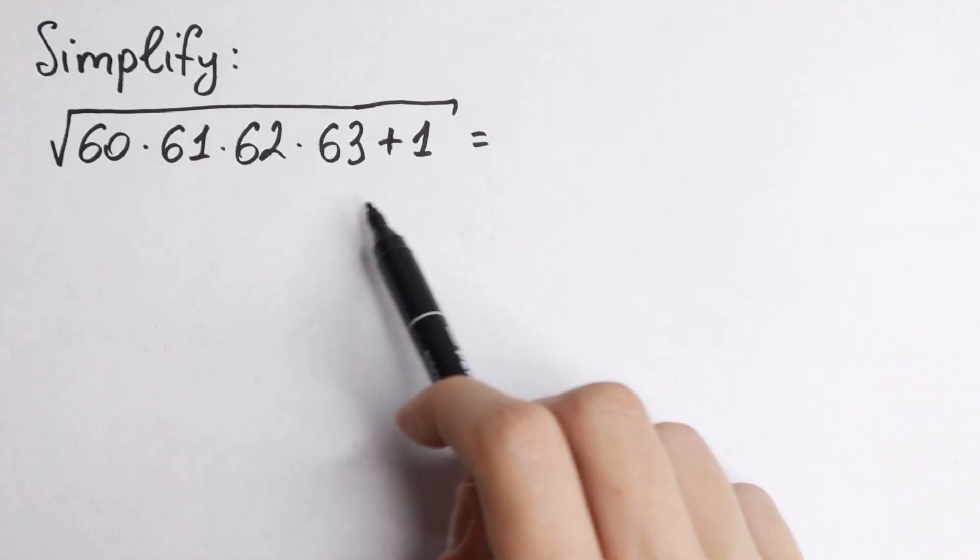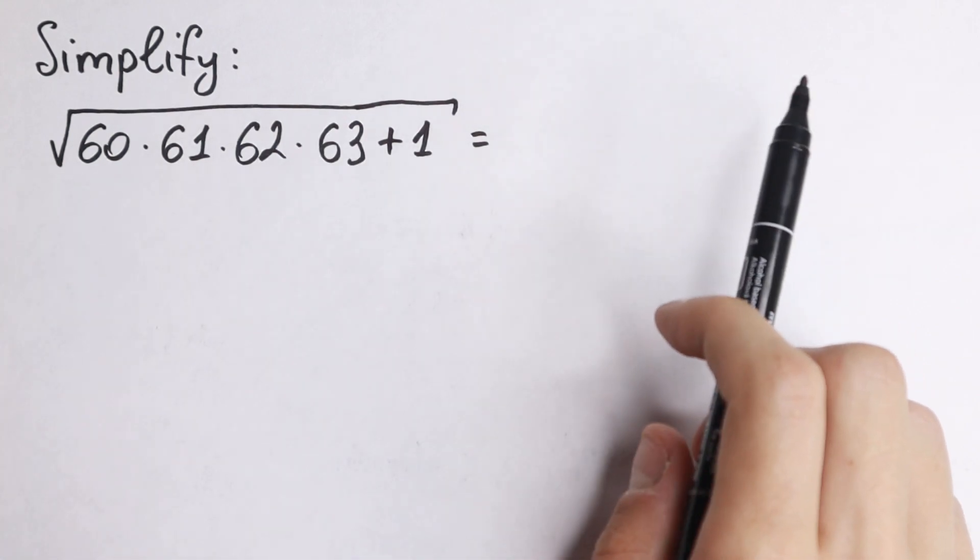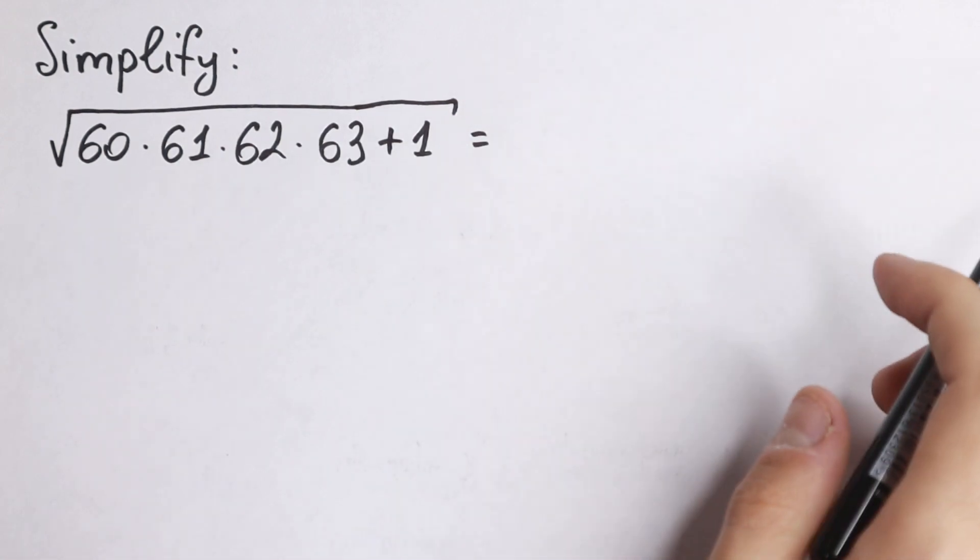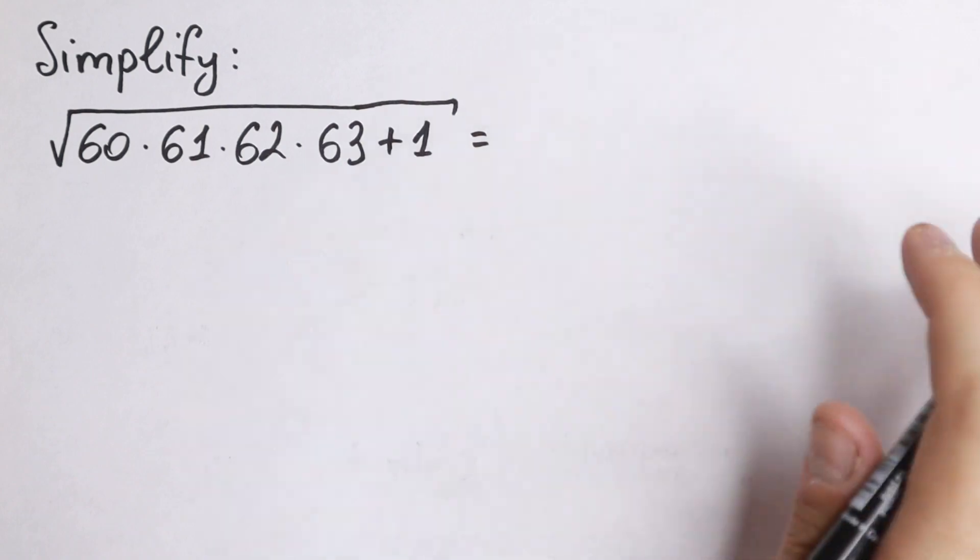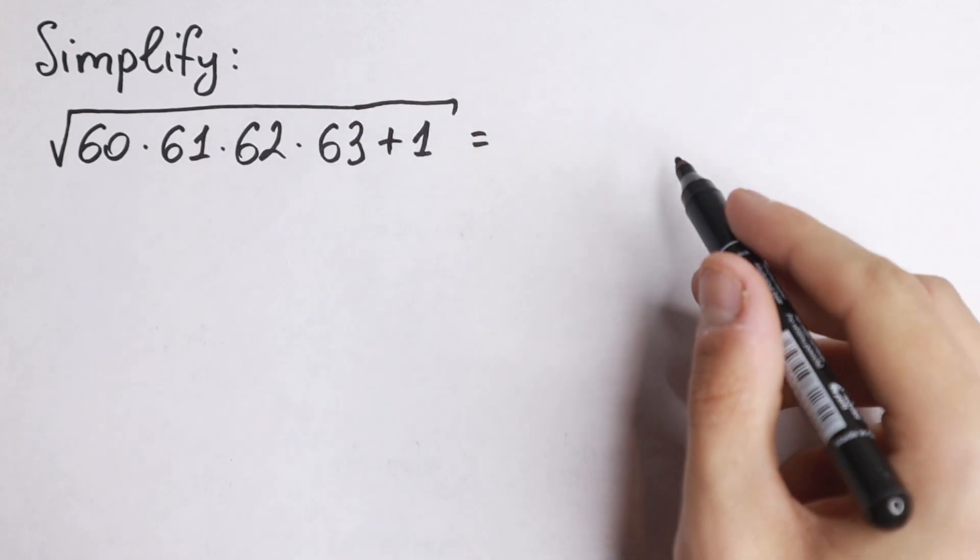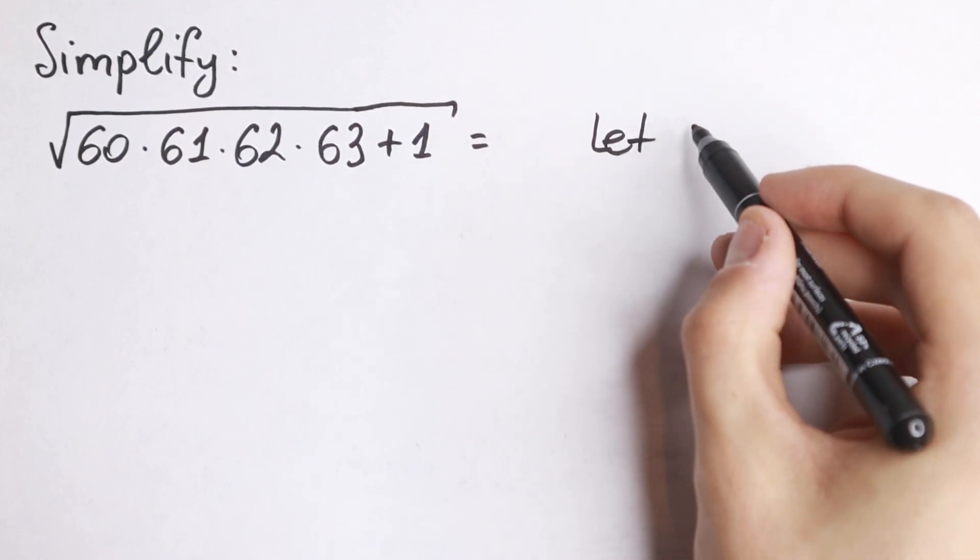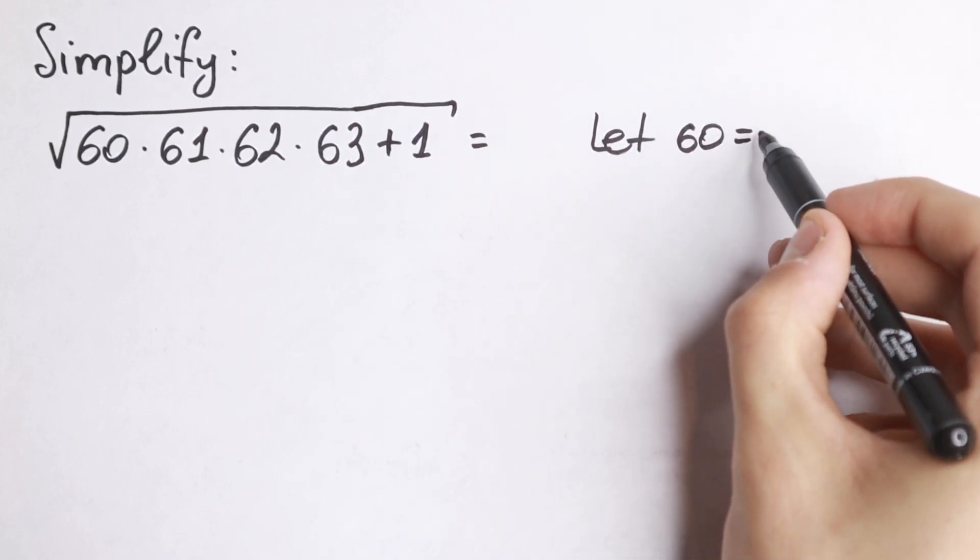We need to find the square root from this value. How can we do this? We can multiply it, but it's not a good method for us. We need to find a really good trick. I suggest you a really good trick. Let 60 equal to n.